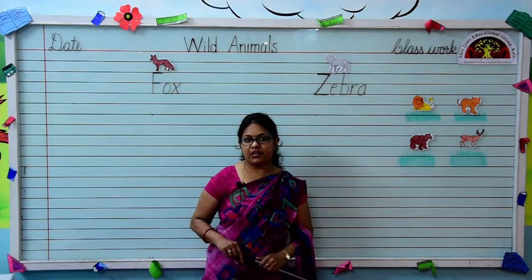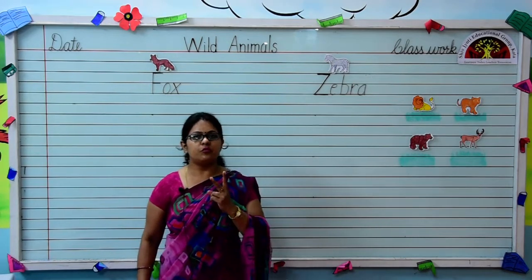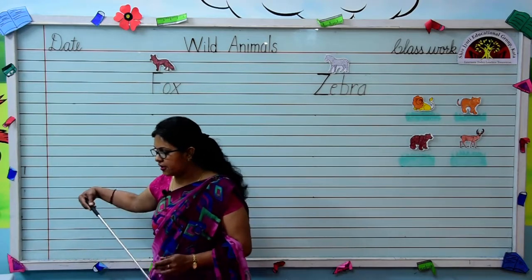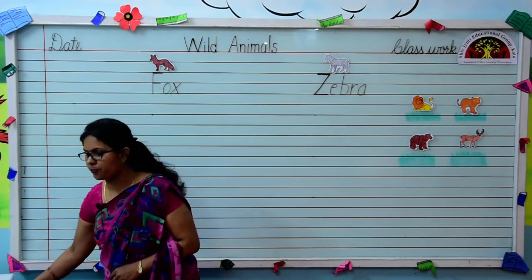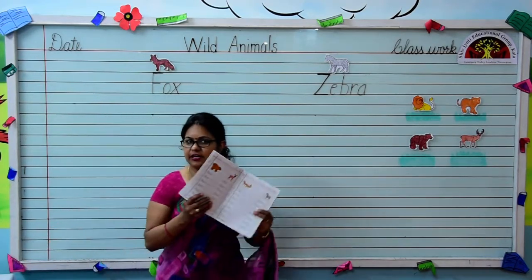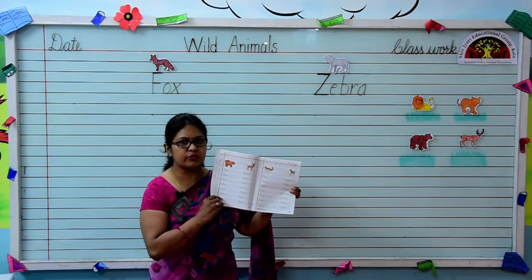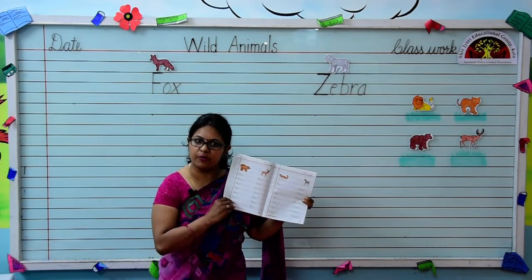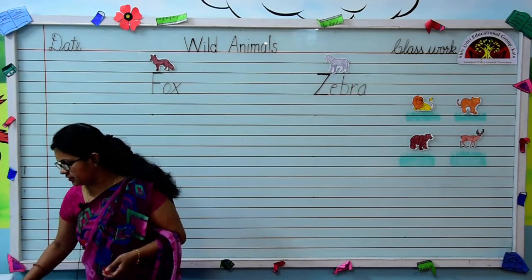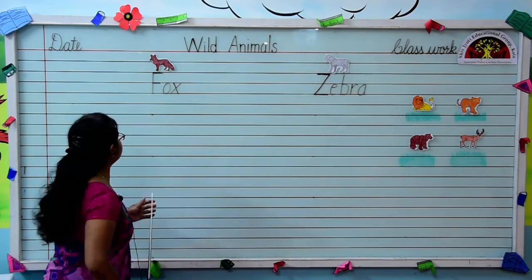So today we will learn the spelling of two more animals. Now open your general awareness workbook, page number 33. Mention the date and classwork and sharpen your pencil. First we will read the spelling, then we will learn it.